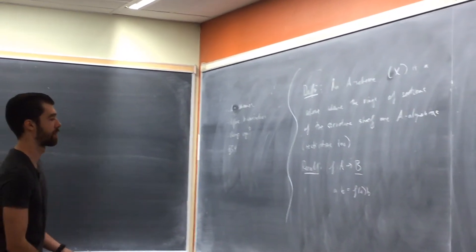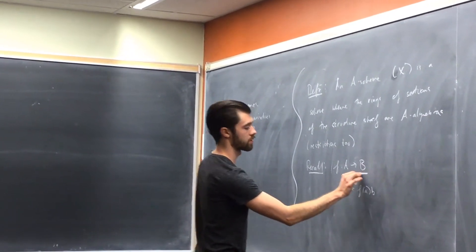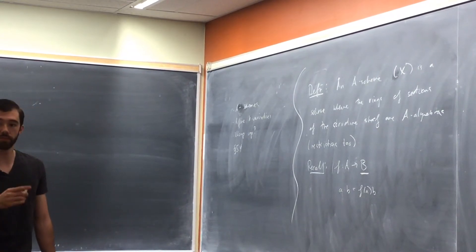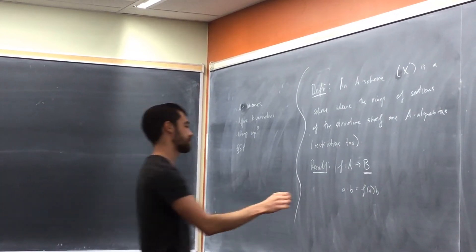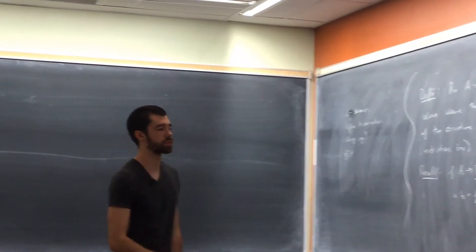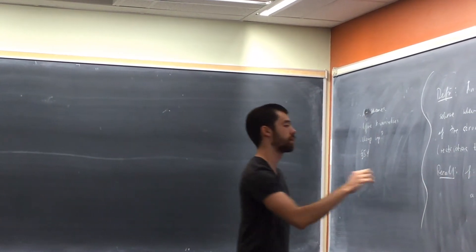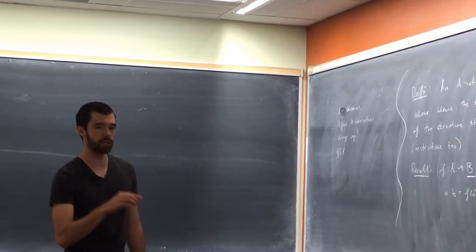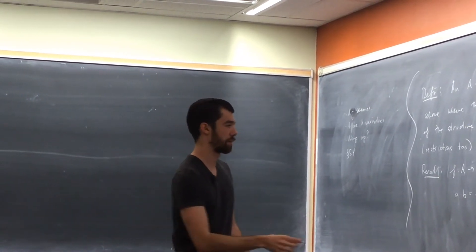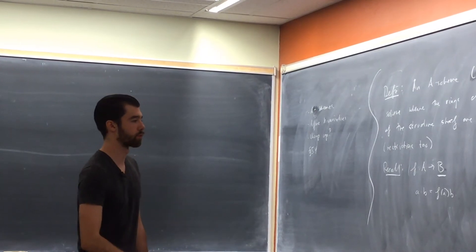Maybe recall also: if B is finite as an A-module, we usually call the algebra finite. If it's finitely generated as an algebra — that is to say, there are some elements X1 through Xn in B and every element in B is a polynomial in those variables with coefficients taken out of A — then we call it finitely generated, or finite type.